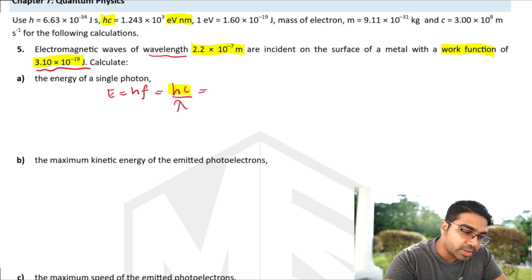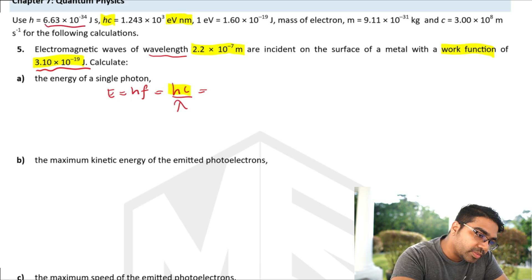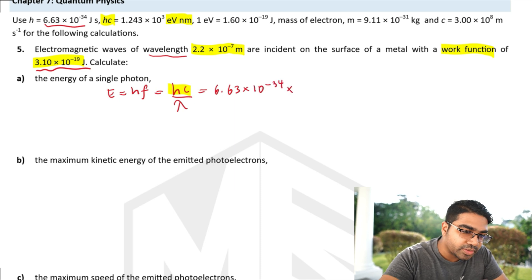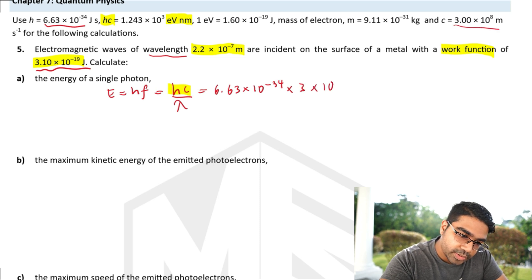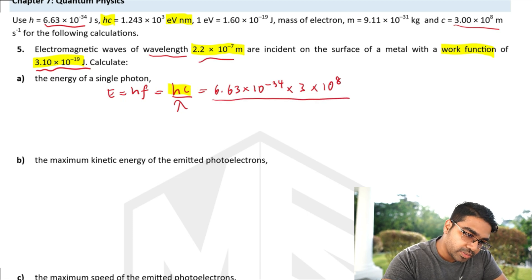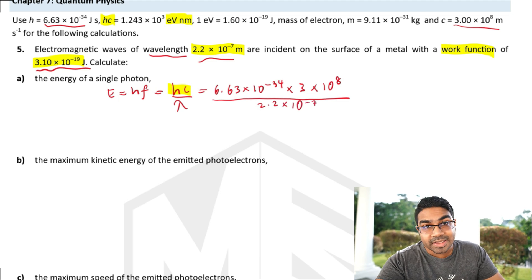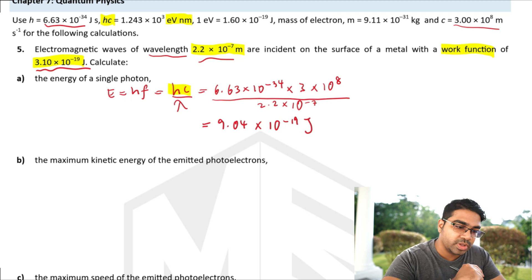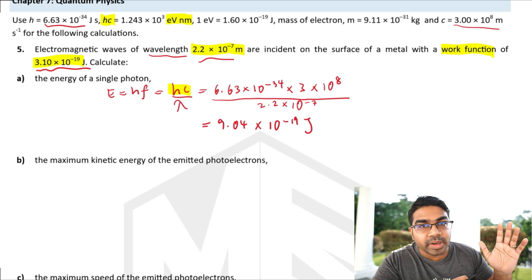Substituting individually: H is 6.63 times 10 to the power of negative 34, C is 3 times 10 to the power of 8, and lambda is 2.2 times 10 to the power of negative 7. The answer we get is 9.04 times 10 to the power of negative 19 joules. This is the energy of a single photon from the electromagnetic wave.